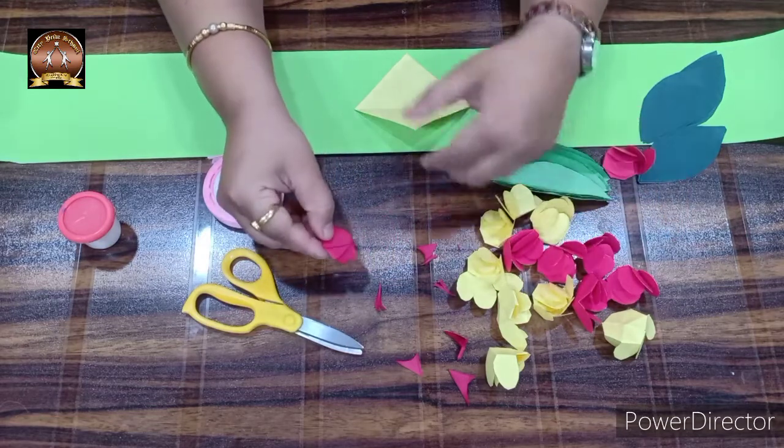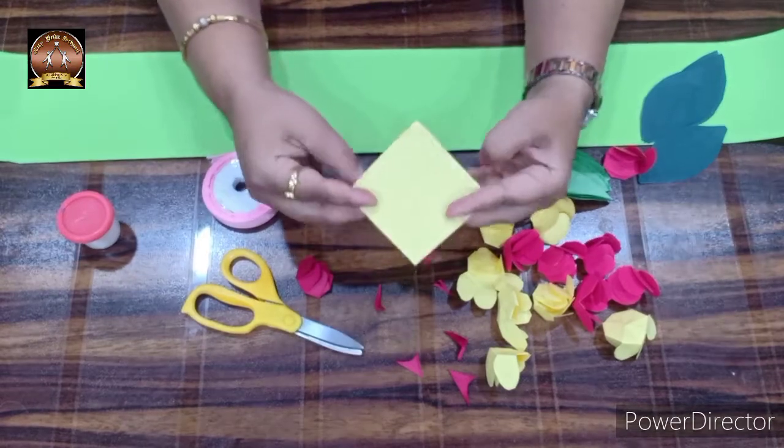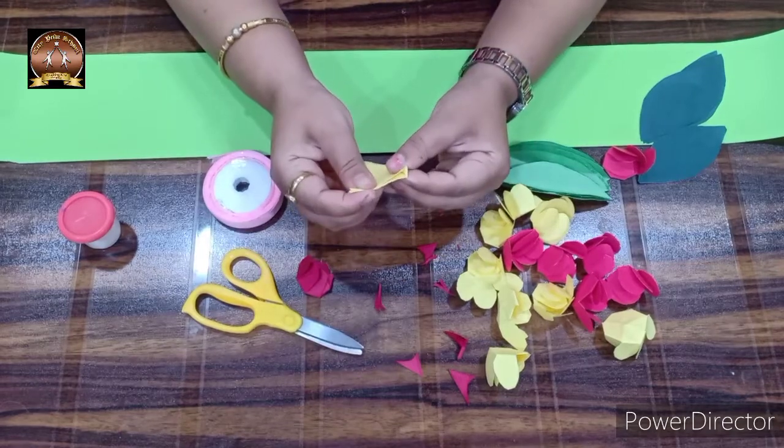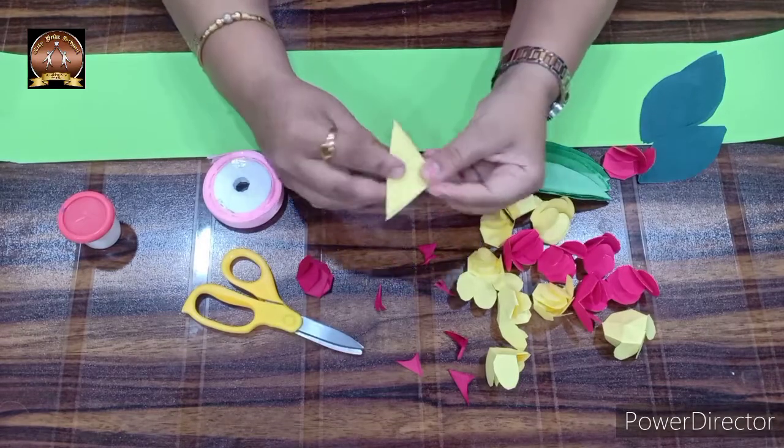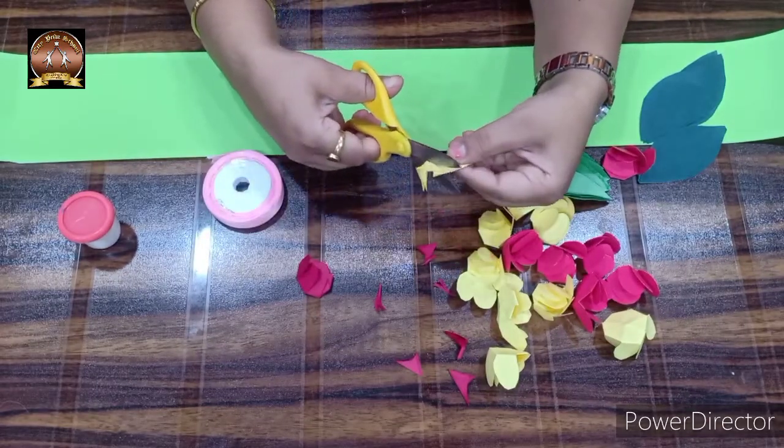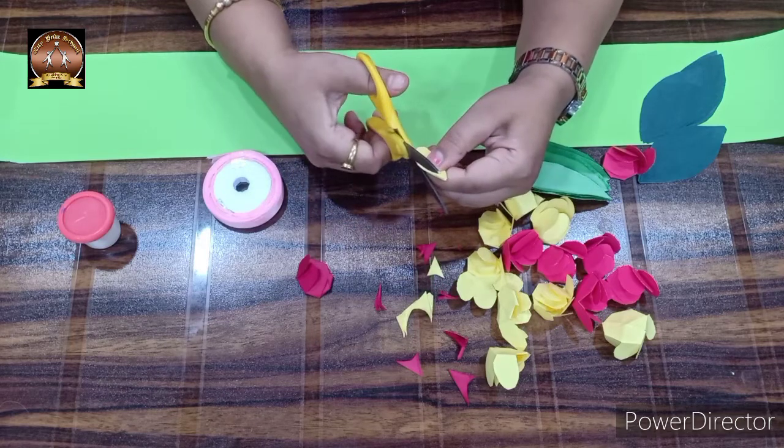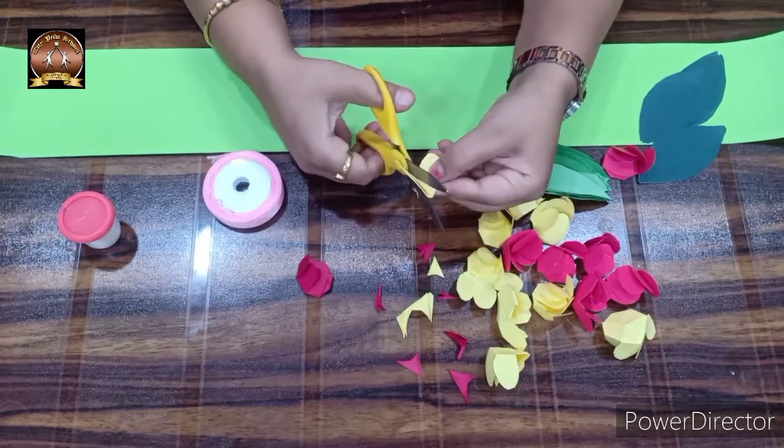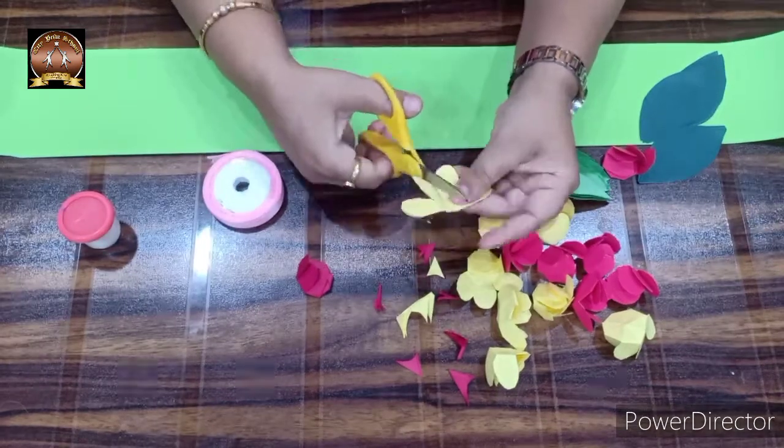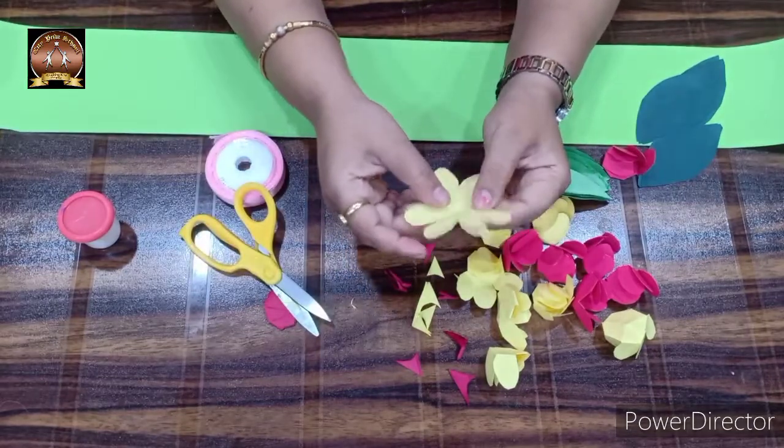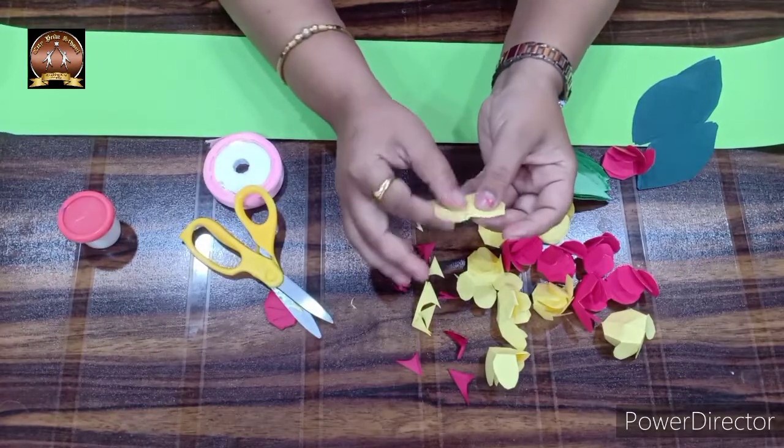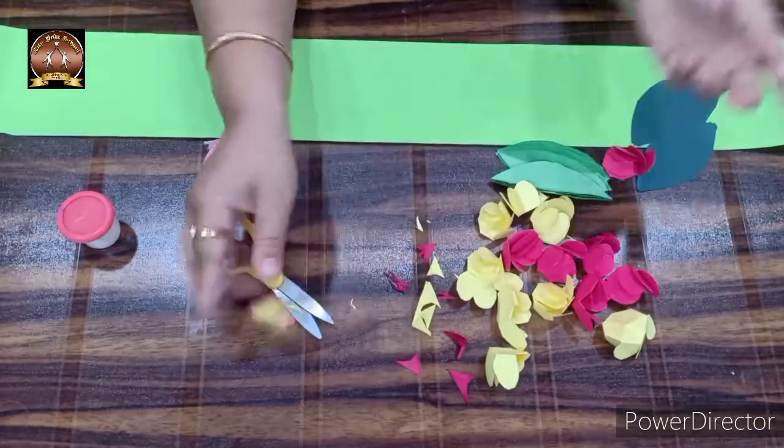Once again, I will show you the same flower. First, take the square paper, fold it in the middle, fold it in the middle again, and fold it in the middle once more. Then give a cut in a C shape and open it. Where we were folding, give a little deep cut. Now open it and fold the petals to make it 3D.